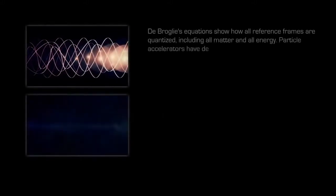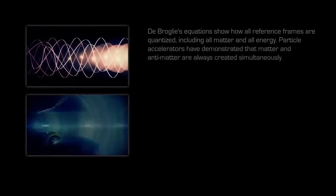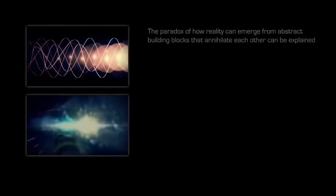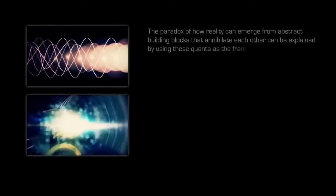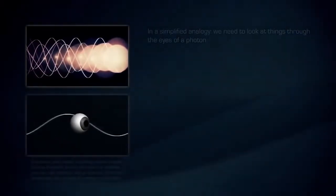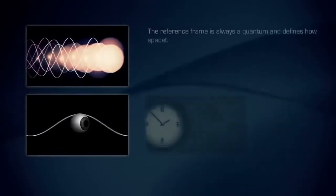De Broglie's equations show how all reference frames are quantized, including all matter and all energy. Particle accelerators have demonstrated that matter and antimatter are always created simultaneously. The paradox of how reality can emerge from abstract building blocks that annihilate each other can be explained by using these quanta as the frame of reference. In a simplified analogy, we need to look at things through the eyes of a photon.